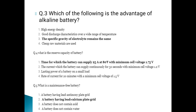The advantage of an alkaline battery is that the specific gravity of the electrolyte remains the same. The reserve capacity of a battery is the time for which the battery can supply 25A current at 80°F with a minimum cell voltage of 1.75V.